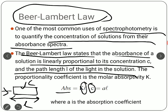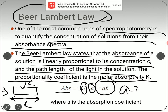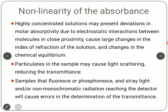Since absorption is proportional to path length l and concentration c, a proportionality constant is involved, known as molar absorptivity k. The full Beer-Lambert relation is: Absorbance A = k × c × l, where k is the molar absorptivity. Combining the constant and concentration terms gives what is called the absorption coefficient.